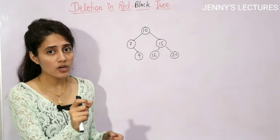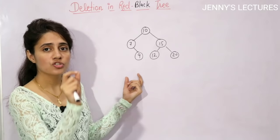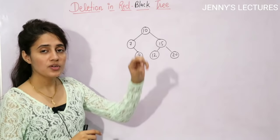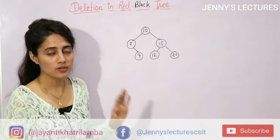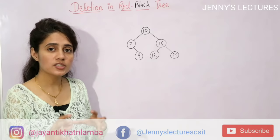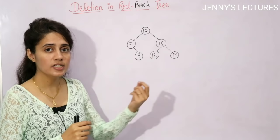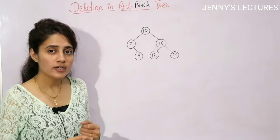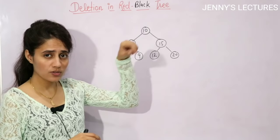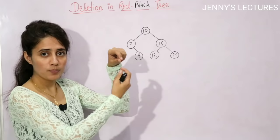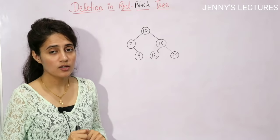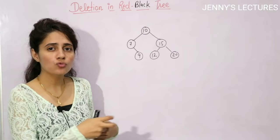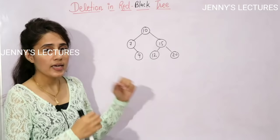In insertion, we follow standard BST insertion rules. If the tree is empty, we create a black node. If not empty, we always insert a red leaf node, which may cause a red-red conflict. To resolve that conflict, we perform rotations or recoloring.